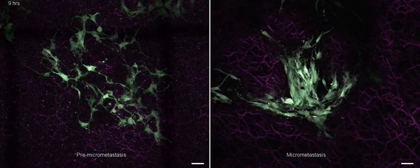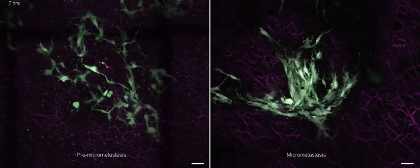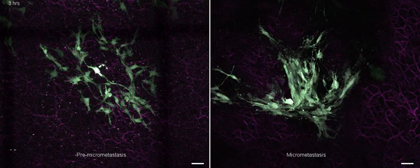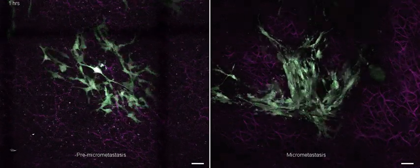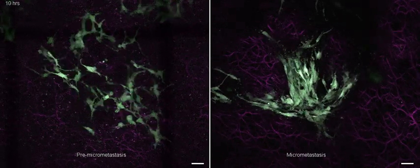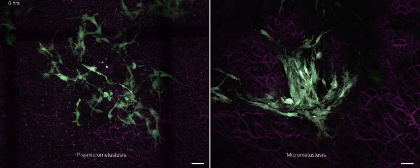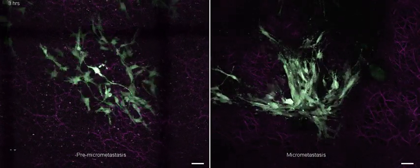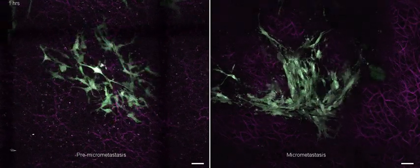On the left-hand side, you see a pre-micrometastasis. On the right-hand side, you see a micrometastasis. We injected fluorescent colorectal tumor cells. They arrive in the liver, and on the left-hand side, you see a three-day-old pre-micrometastasis. On the right-hand side, a five- to six-day-old micrometastasis.